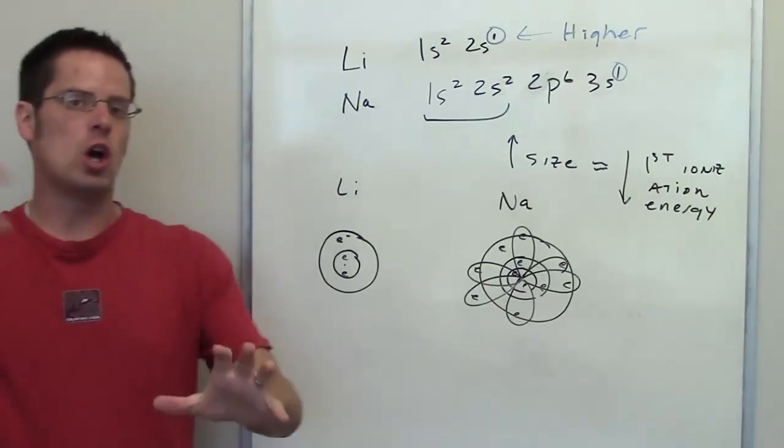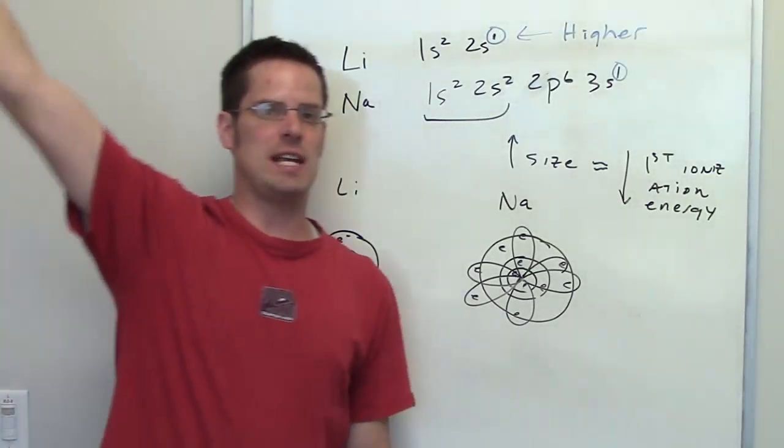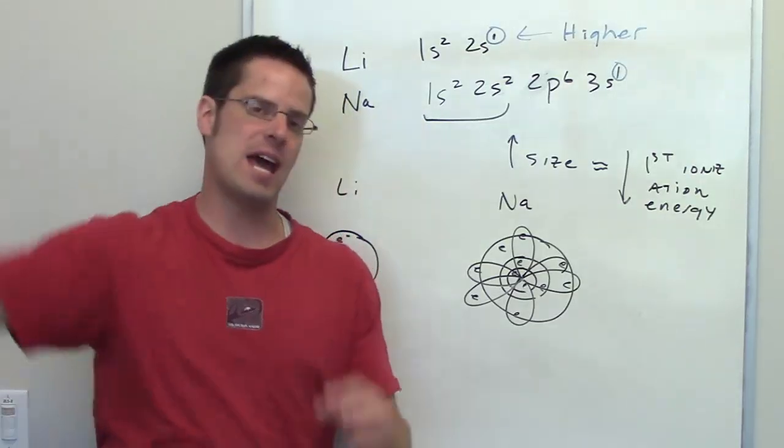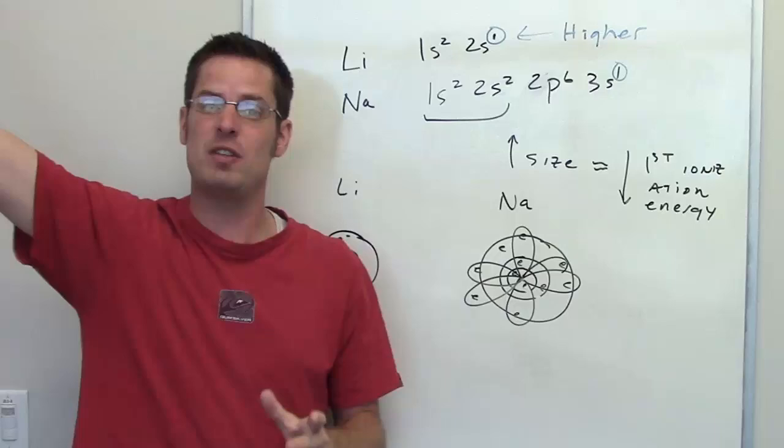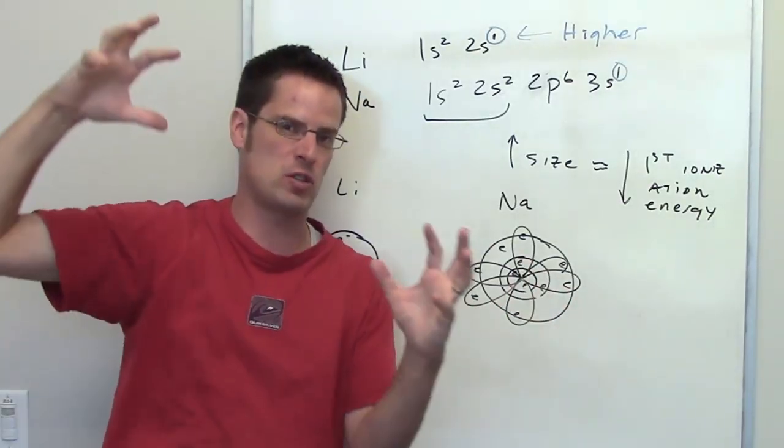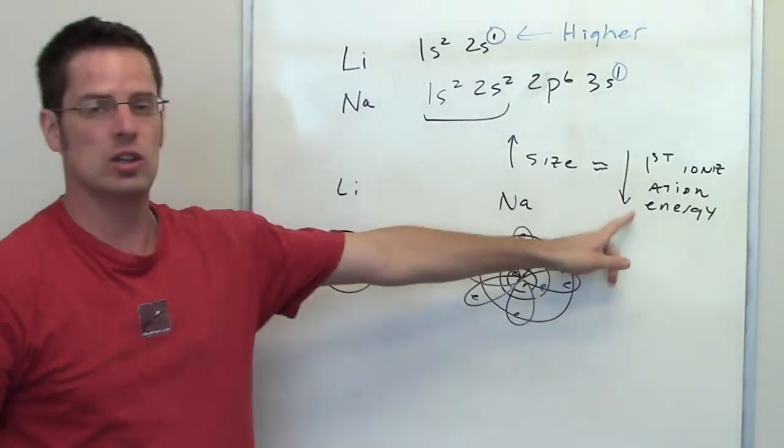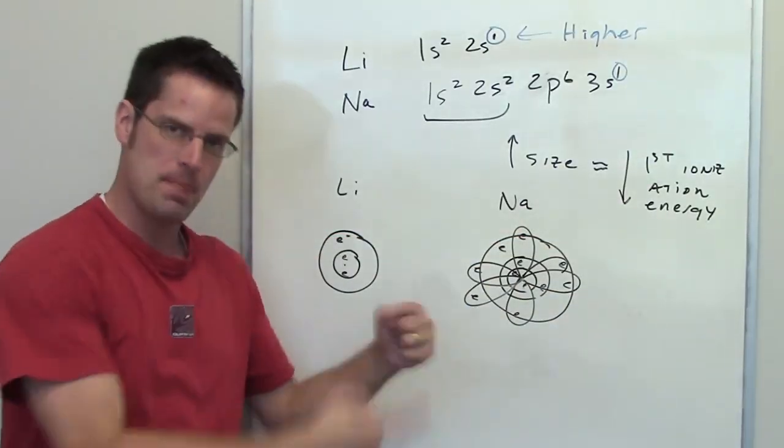So as you get an element that's larger and larger, it's easier and easier to take that electron in the outermost orbital away because that electron is so much further from the nucleus that it doesn't feel it as much as an electron would if it were smaller. So larger the size, the lower the first ionization energy and vice versa.